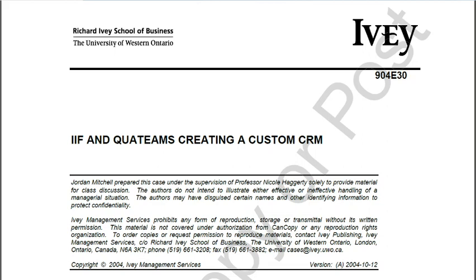How should QuaTeams resolve outstanding issues with CRM development? Regarding database issues — QuaTeams chose to build a system using a Java front-end on a Linux server and SQL on a Windows 2000 server. This makes no sense if the goal was a non-proprietary system — why mix proprietary Windows with an open-source Linux front-end? The first concern for QuaTeams needs to be eliminating the long wait time for the Java front-end to interface with the SQL database.